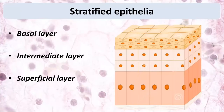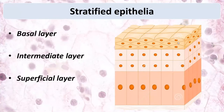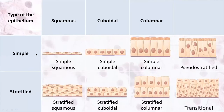Stratified epithelium has two or more layers of cells, and only the basal cells are attached to the basement membrane. There may be a basal layer, an intermediate layer, and a superficial layer. If this epithelium has only two layers, there are only basal and superficial layers; if there are three or more layers, there is an intermediate layer. Stratified epithelium may be squamous, cuboidal, columnar, or transitional type.